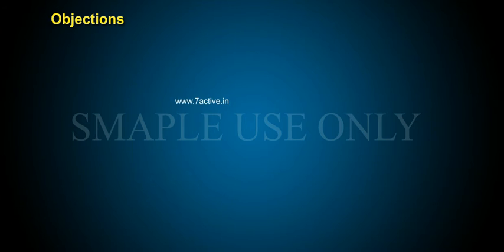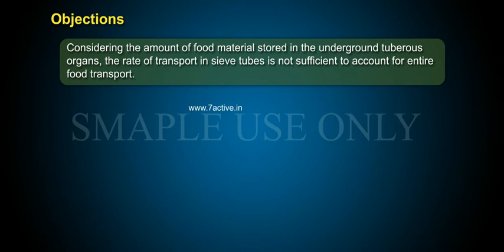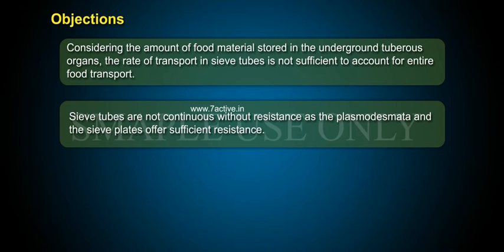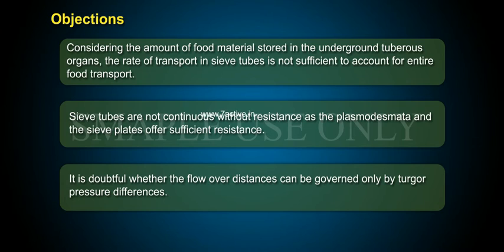Objections: Considering the amount of food materials stored in the underground tuberous organs, the rate of transport in sieve tubes is not sufficient to account for entire food transport. Sieve tubes are not continuous without resistance, as the plasmodesmata and the sieve plates offer sufficient resistance. It is doubtful whether the flow over distances can be governed only by turgor pressure differences.